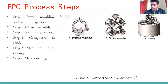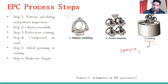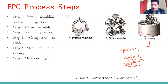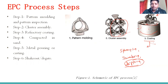The next step is coating. There are three techniques available for coating: spraying, swabbing, and dipping. Here we are using dipping. This is a flask, and inside there are refractory materials. We dip the complete cluster assembly into the refractory materials and keep it inside for a set time, after which we get a uniform thickness of refractory material coating on the pattern surface.